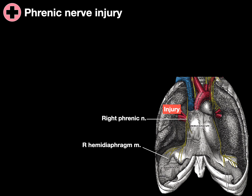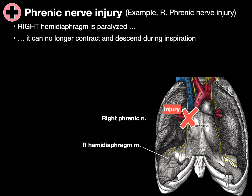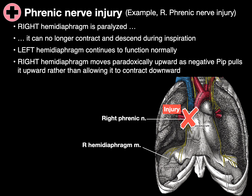If the phrenic nerve is injured — for example, the right phrenic nerve — the right hemidiaphragm is paralyzed and can no longer contract and descend during inspiration. The left hemidiaphragm continues to function normally, so the right hemidiaphragm moves paradoxically upward as negative intrapleural pressure pulls it upward rather than allowing it to contract downward.